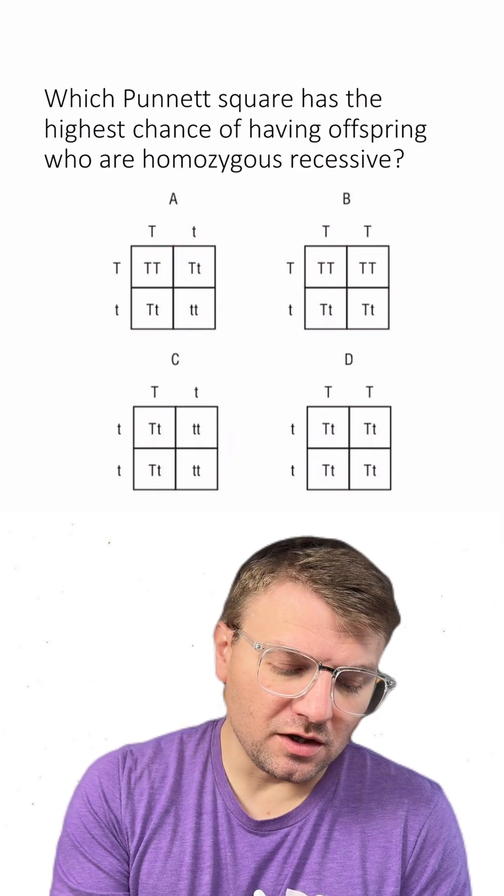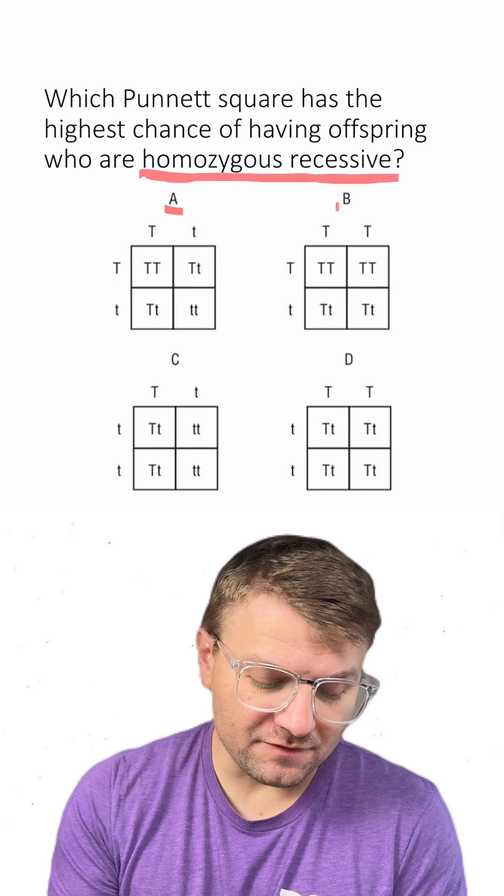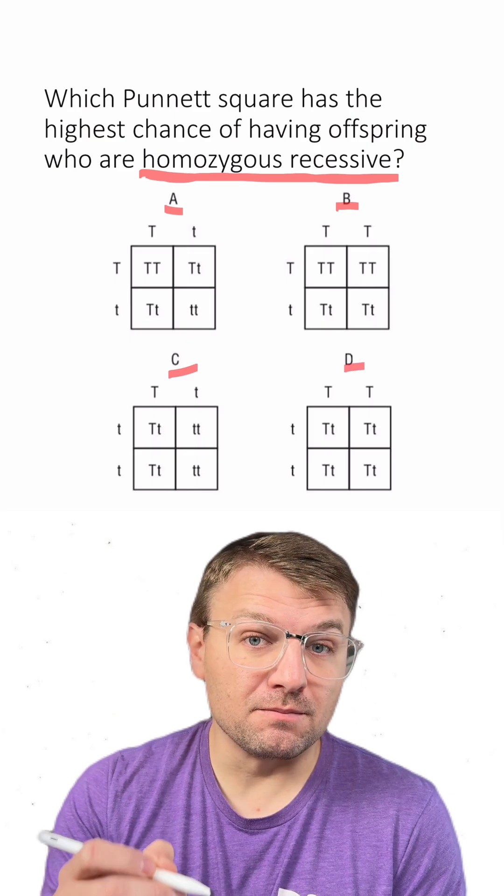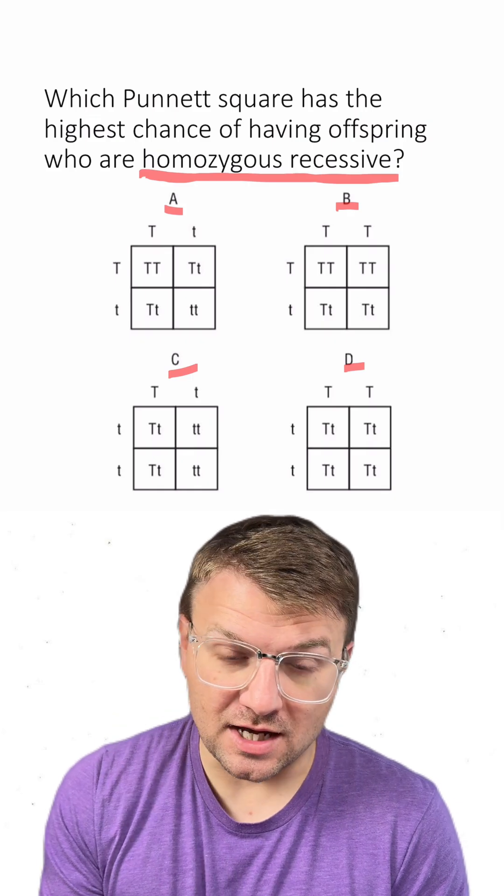In this question, we're looking for a genotype of the offspring to be homozygous recessive. We're looking at which one of these Punnett squares produces the most chances or the most genotypes that would be homozygous recessive.